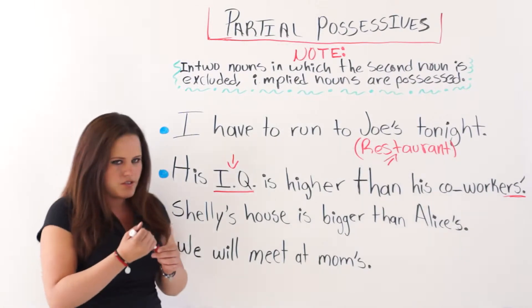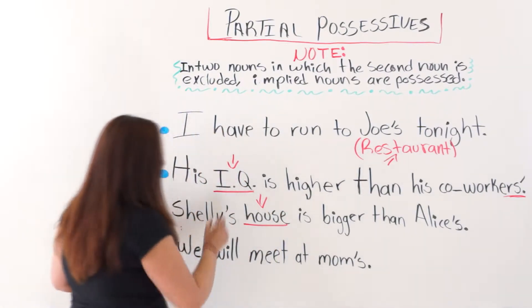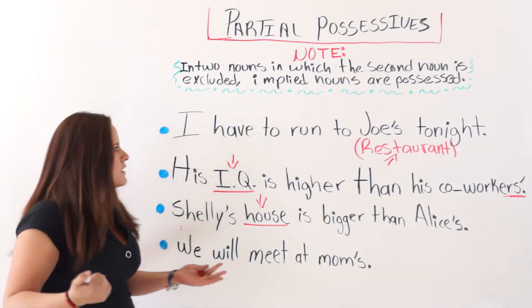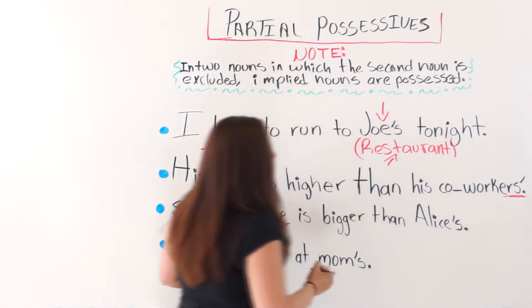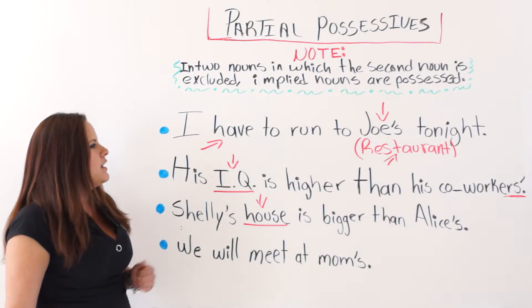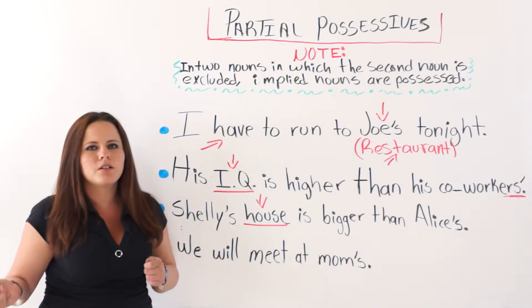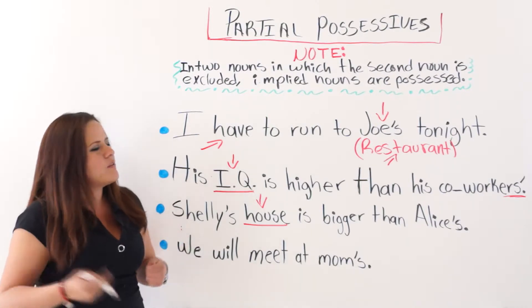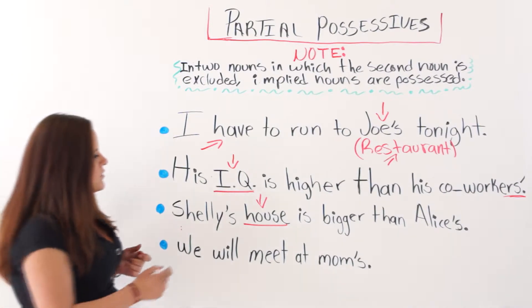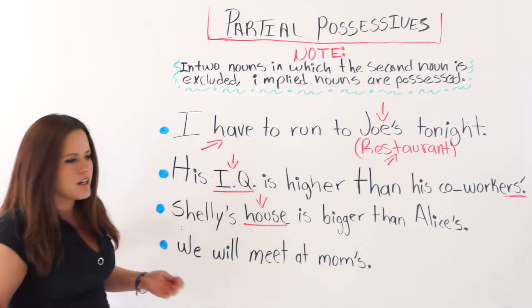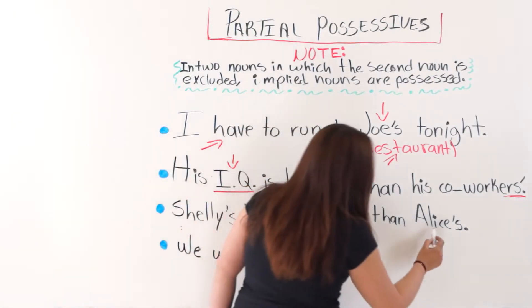Shelly's house is bigger than Alice's. This is very easy because we have the noun right here, so we know which is the implied noun. Not like the Joe's example, where you would have to know who is talking and who is being spoken of to know which noun is implied. Since we are talking about a house, we know that 'house' is the implied noun. We could say Shelly's house is bigger than Alice's house, but since this is a partial possessive, it is fine as is.